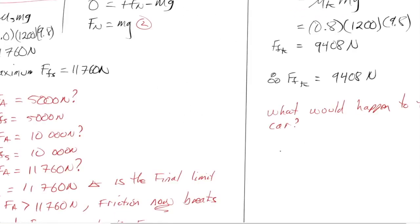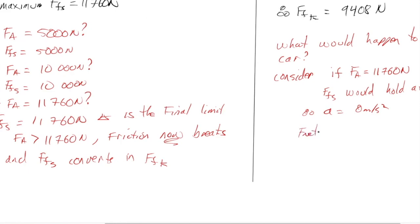All right. So consider, if Fa was equal to 11,760 newtons, force of friction static would hold at 11,760 newtons. Therefore, acceleration would be equal to 0 meters per second squared. And the reason why is Fnet would be equal to the applied force plus the force of friction static. So that would be plus Fa minus the force of friction static. That's 11,760 minus 11,760 zero newtons.